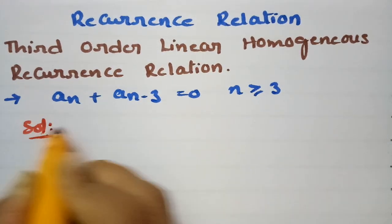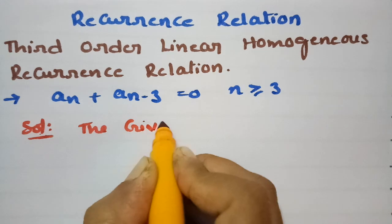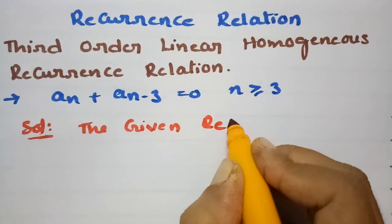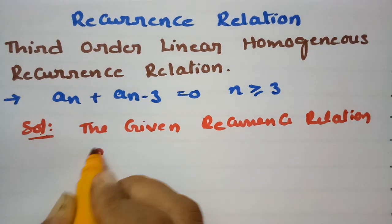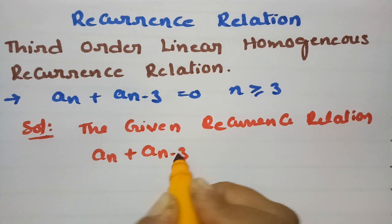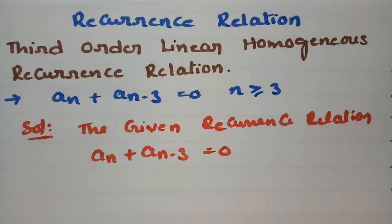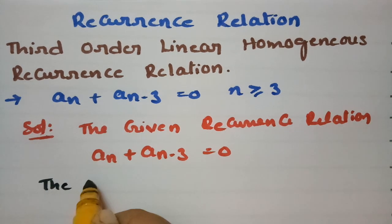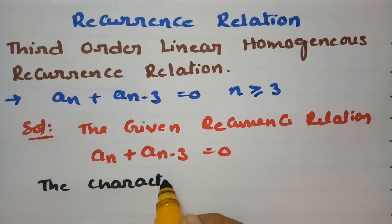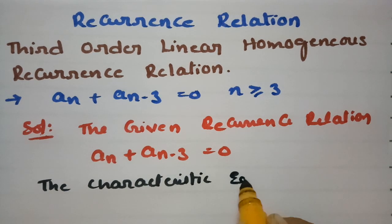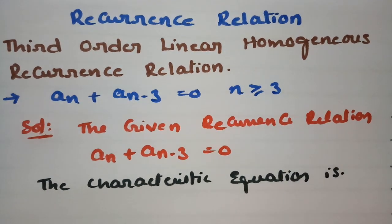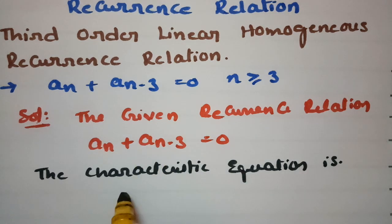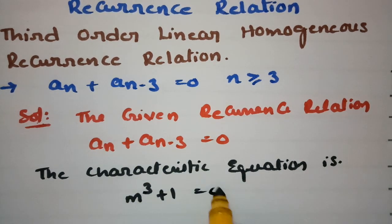According to the solution, the given recurrence relation is aₙ + aₙ₋₃ = 0. First of all, we have to write the characteristic equation. The characteristic equation is of order 3, so this will be m³ + 1 = 0.